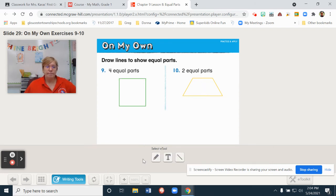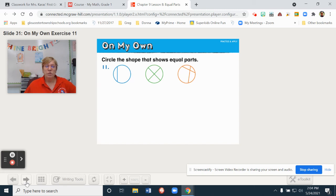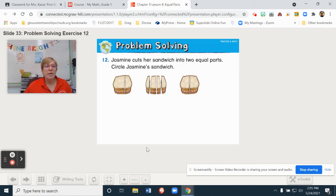Now, for number 11, I would like you to please circle the shape that shows equal parts, pause, and solve the problem. And here you go. Yes, it's the one in the middle. Sure, you can look and see none of these have equal parts. Jasmine cut her sandwich into two equal parts. Circle Jasmine's sandwich now. And then come back and check your answer. Good job. The last one.